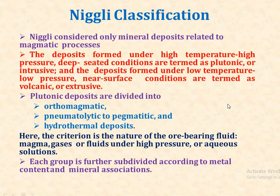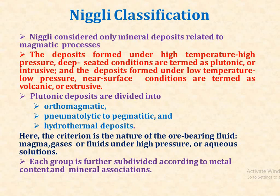Now we discuss Niggli's classification of mineral deposits. Niggli considered only mineral deposits related to the magmatic process. Deposits formed under high temperature, high pressure, deep-seated conditions are termed plutonic or intrusive, and deposits formed under low temperature, low pressure, near-surface conditions are termed volcanic or extrusive. The plutonic deposits are divided into orthomagmatic, pneumatolytic to pegmatitic, and hydrothermal deposits, with the criteria being the nature of the ore-bearing fluid — magma, gases or fluids under high pressure, or aqueous solutions.